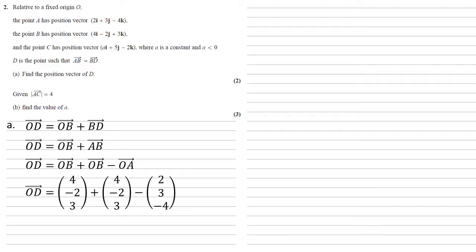OB is (4, -2, 3), OA is (2, 3, -4). Bringing them together and completing the sum gives us OD equal to (6, -7, 10).